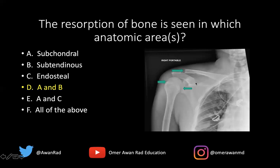There actually might even be subligamentous resorption. If you take a look along the undersurface of the clavicle, this is where the coracoclavicular ligaments run — between the coracoid process of the scapula to the undersurface of the clavicle. The trapezoid and conoid components of the coracoclavicular ligaments insert right here. So there's even evidence of subligamentous resorption, but that wasn't included in the answer choices. So the best choice here would be A and B.